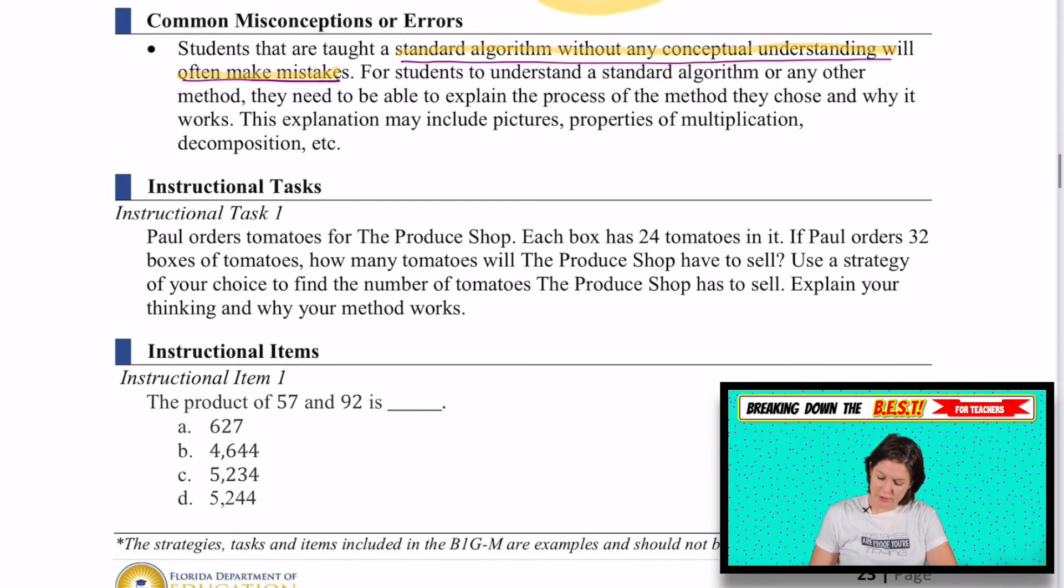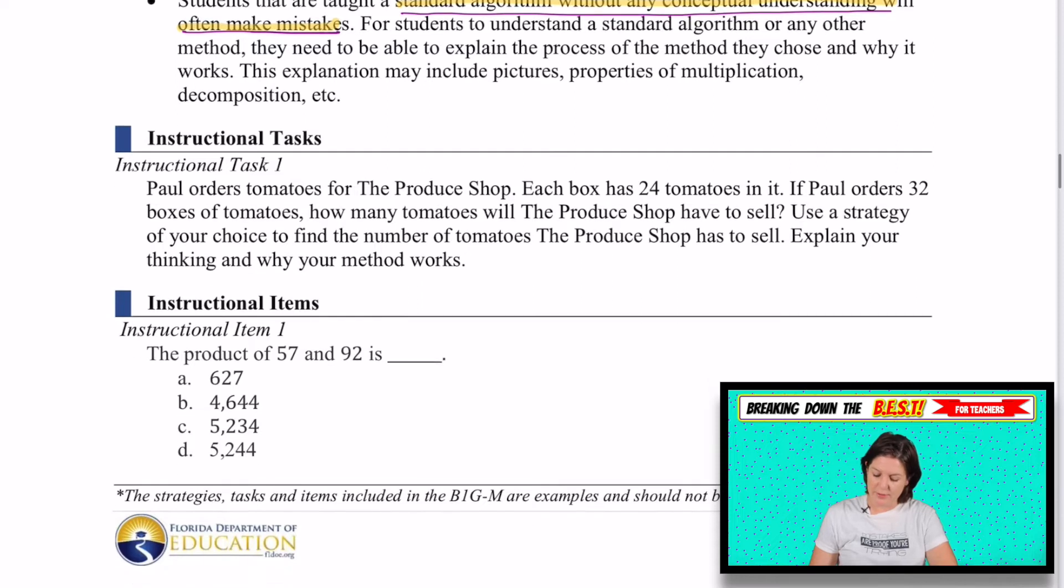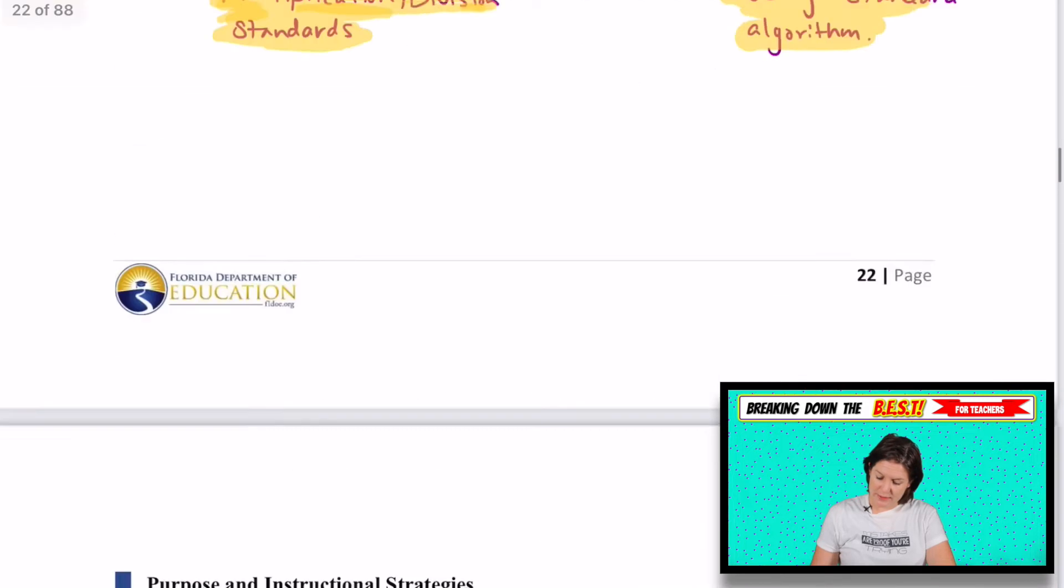And here are some instructional tasks and items examples. So I guess one thing to point out is just seeing the word product right there. Sometimes students are like, I don't know what to do with that word product. What does that mean? And we need to be making sure that we're teaching them that that means that we're finding the answer to a multiplication problem. Okay, cool.